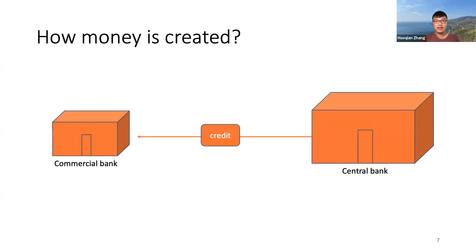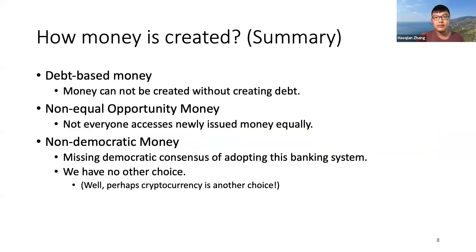A similar thing can happen one layer above: the commercial bank can also get credit from the central bank, and that money is created by the central bank from thin air again. To summarize: the money we have is really debt-based money — we cannot even create money without creating debt first in our current banking system.